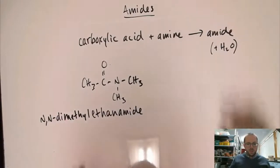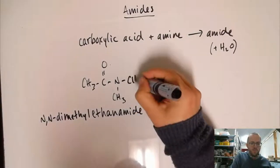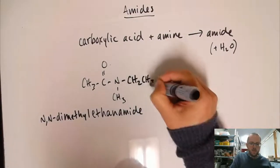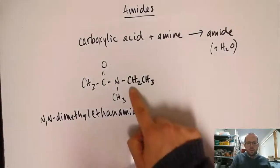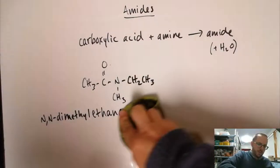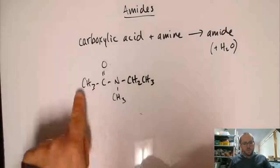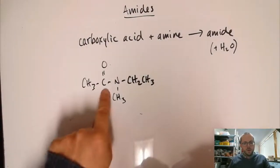I just want to make matters more complicated, because we can. What about if we have an ethyl group here and a methyl group? We've still got this part which was the carboxylic acid, so it's ethanamide.